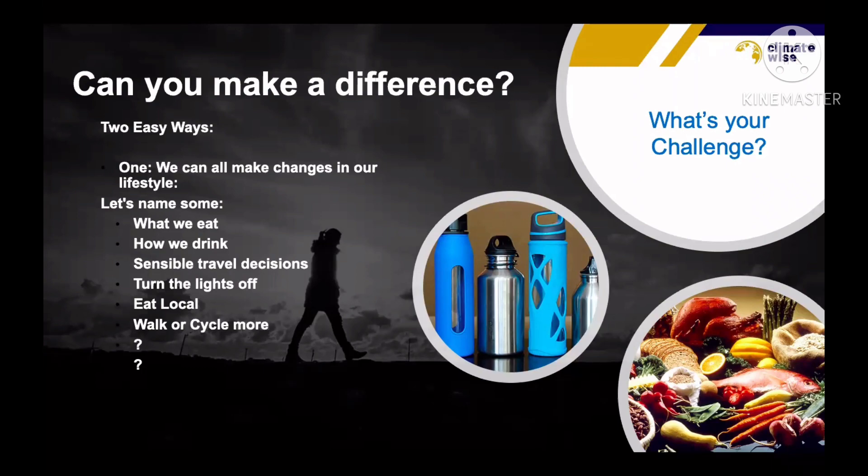You can make a difference. Yes, you can. You can change what we eat. As an example, I became pescatarian last month. How we drink - try to use reusable water bottles and not buy plastic. Try to make sensible travel decisions, like try and walk if school is close, or turn the lights off when you leave your house or leave a room in your house. Eat local, try to walk or cycle more.